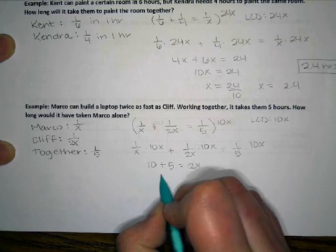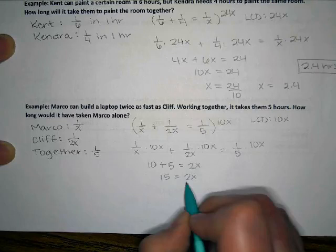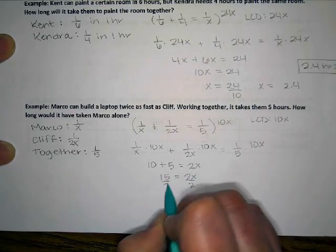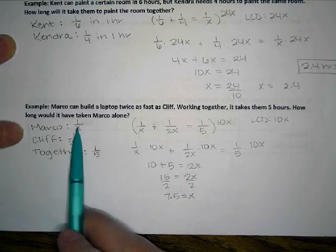So I have 15 equals two X and then I'll go ahead and divide by two. So 7.5 equals X. So X would be Marco's time.